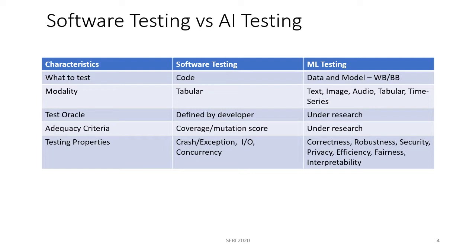Software testing and ML testing differ in many dimensions. In software testing, we typically test the code, whereas in ML testing, we test the data as well as the model. The model can be available as white box or black box. Data testing means assessing how ready or what's the quality of the data for building an AI model. In software testing, it's mostly tabular data, whereas in ML testing, there are various modalities like text, image, tabular, and time series data.